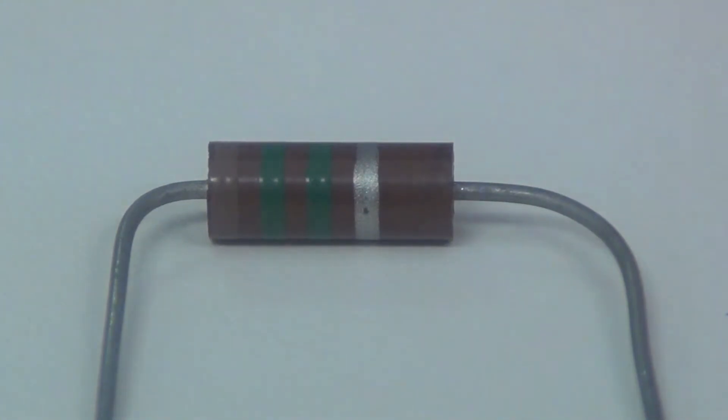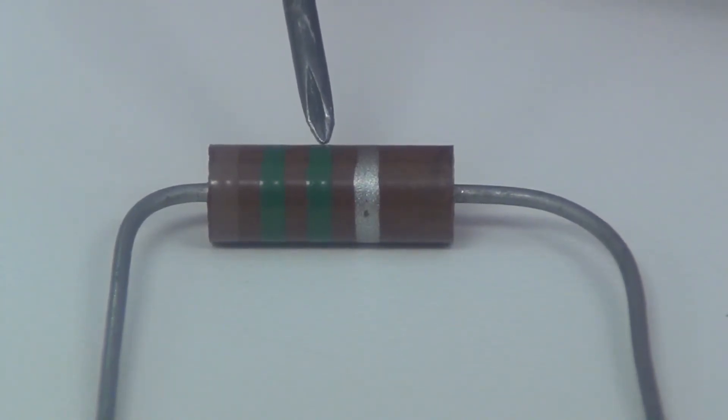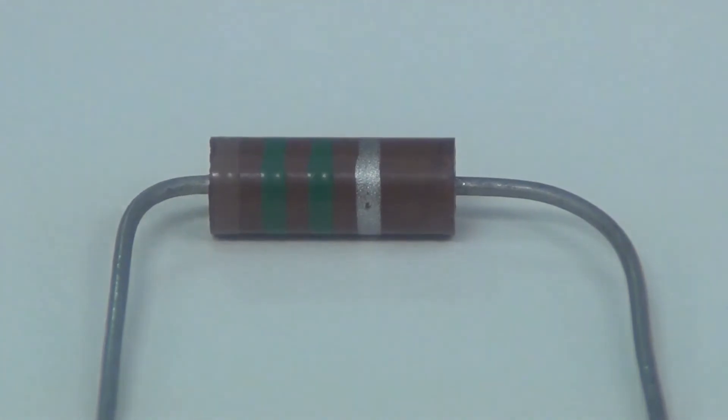In this resistor, we have brown, which is 1, green is 5, and another green will give you 5 zeros as your multiplier. And you have a 10% tolerance, which will give you 1.5 mega ohms.